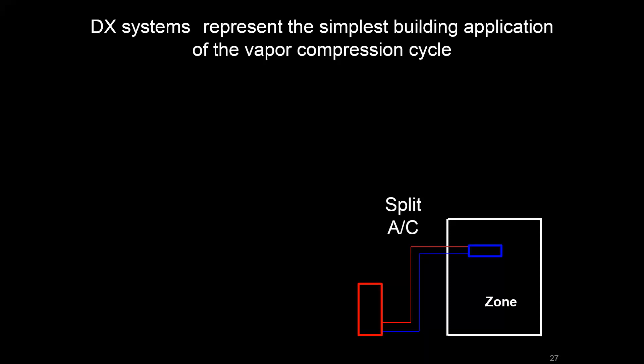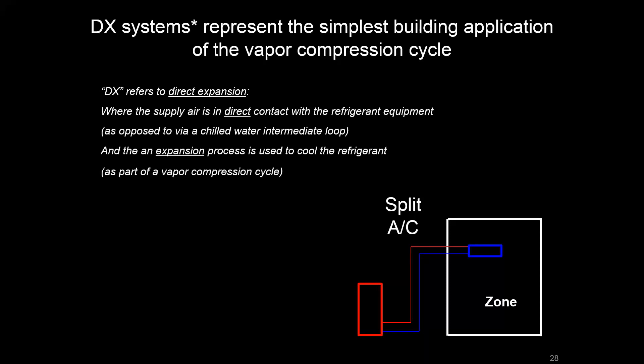Some of us may be familiar with an evaporator inside the zone and a condenser outside the zone. DX, in this case, refers to direct expansion.